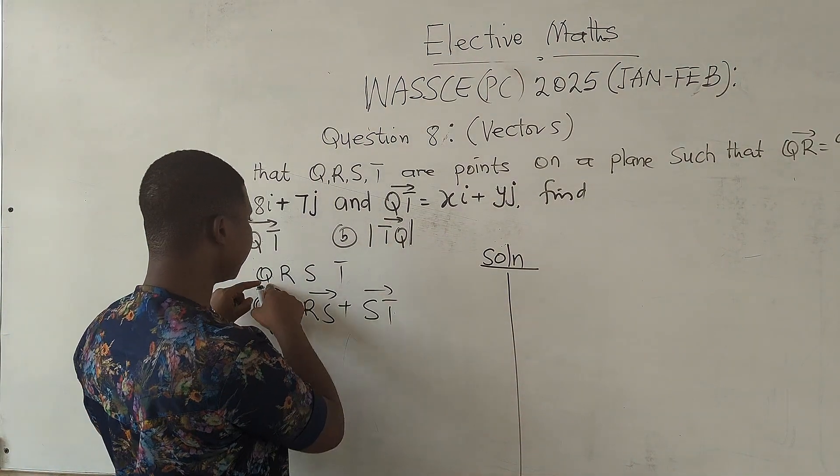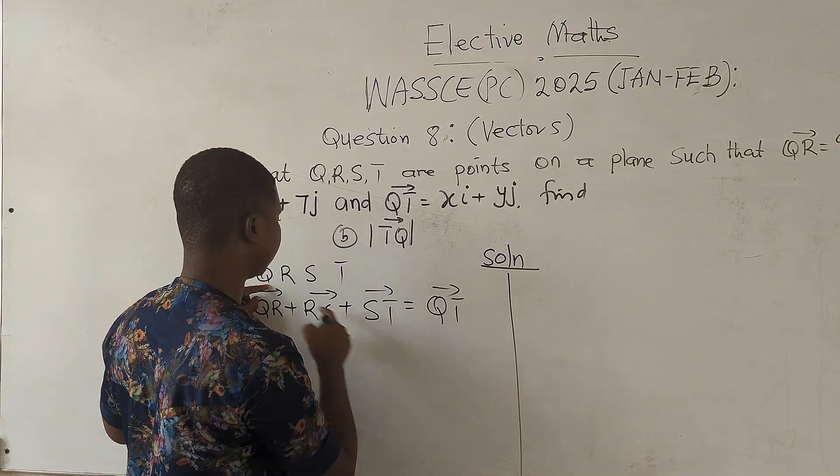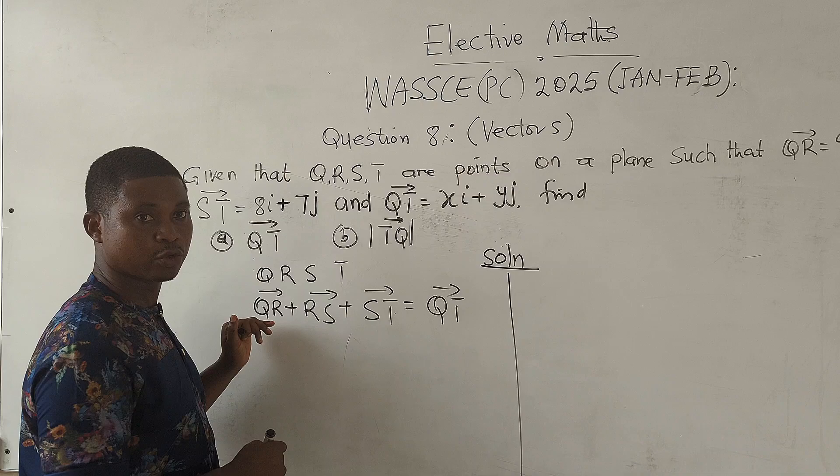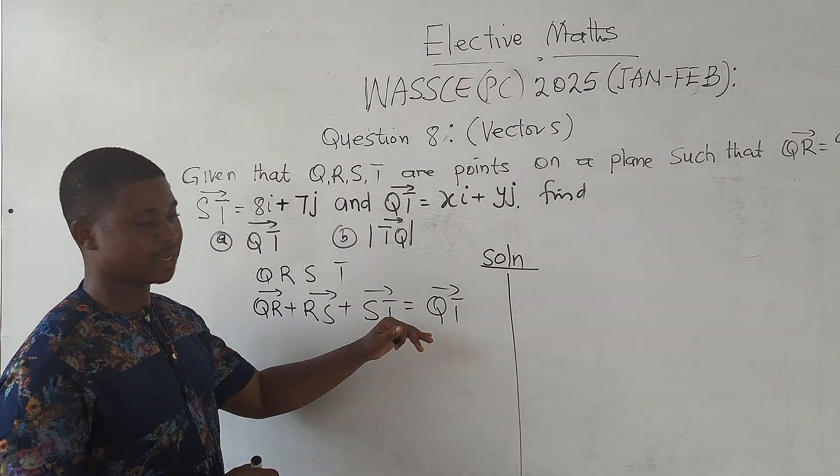should be equal to vector QT. So we know that QT is equal to QR plus RS plus ST.